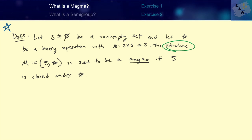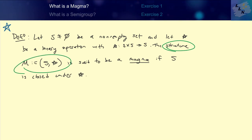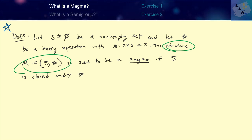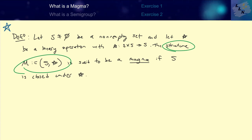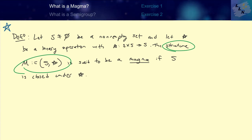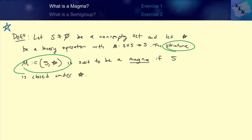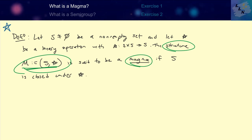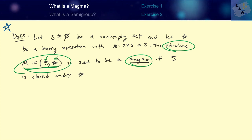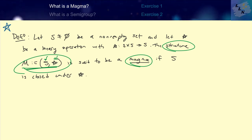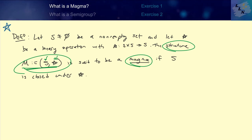The key word here is 'structure.' Some people call it an algebraic structure, which is why this series is called Abstract Algebra. This algebraic structure is an ordered pair — it's a little world where you have the set S and a binary operation defined on that set. We call this structure a magma if S is closed under the binary operation star. In general it's an algebraic structure, but more specifically it is called a magma.